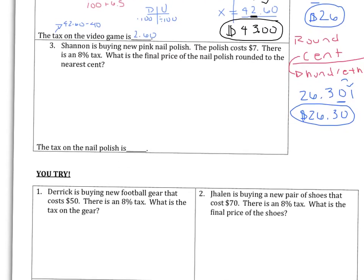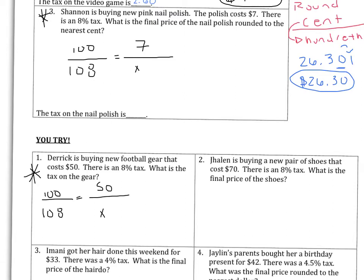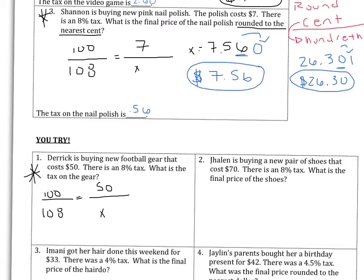For number three, you should have set your proportion up and cross-multiplied to get x equal to $7.56. This question said round to the nearest cent. Go to the hundredths place, draw an arrow next door — there is no digit there, so we treat it as zero, and rounding zero keeps it the same. Your answer should be that the final price of the nail polish rounded to the nearest cent is $7.56, and the tax on your nail polish is $0.56.